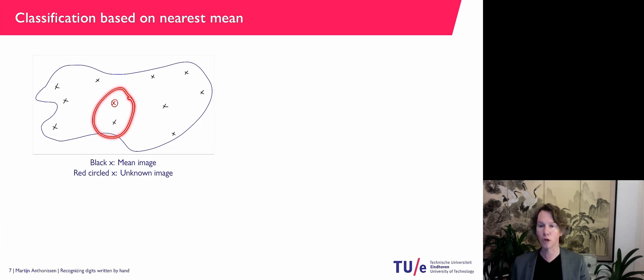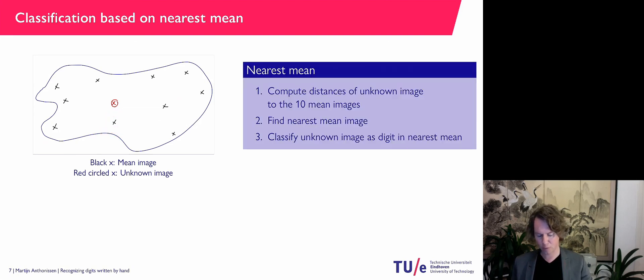And then, of course, what I'm going to do is I'm going to check which one is closest, like here. And I'm going to label my red unknown image as the digit that is here. So in an algorithm, I'm going to compute the distances of the unknown image to the 10 mean images, find the nearest one. And that's how I'm going to classify my unknown image.